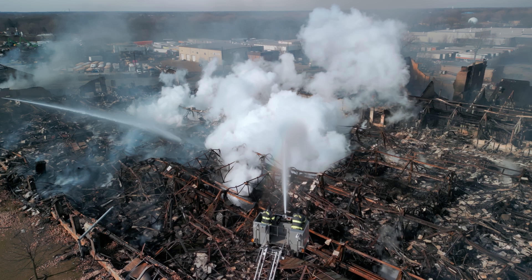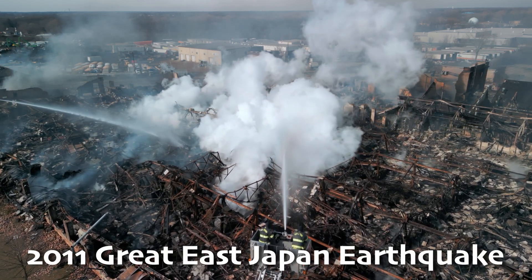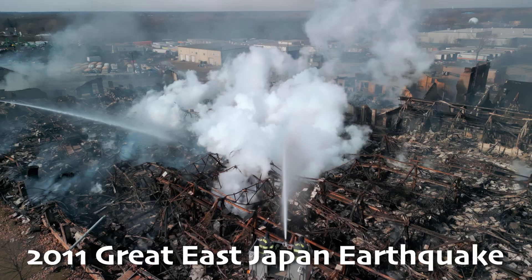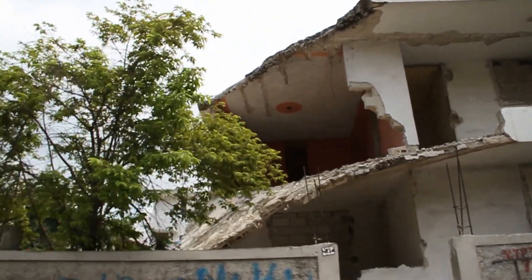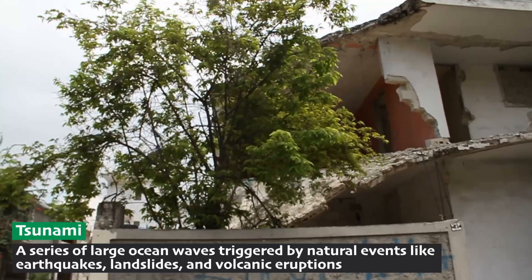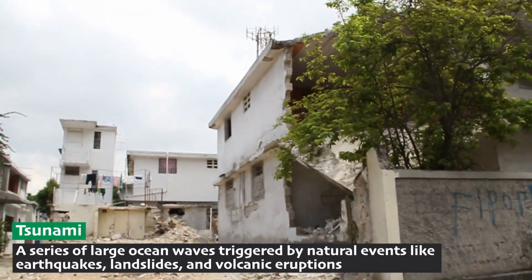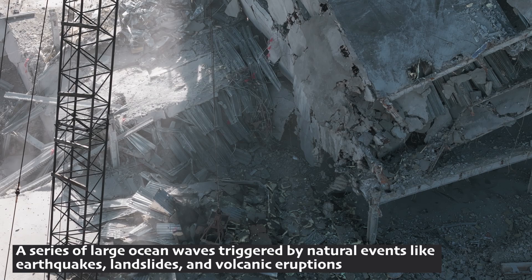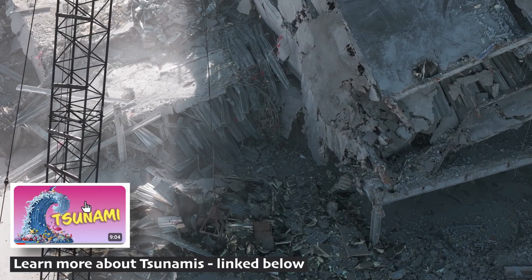Another notable earthquake was in 2011 in Japan, known as the Great East Japan Earthquake. It was one of the strongest ever recorded with a magnitude of 9.0. This earthquake triggered a huge tsunami. Waves as high as 40 meters, which caused lots of damage to coastal towns. These earthquakes show how powerful and destructive nature can be.